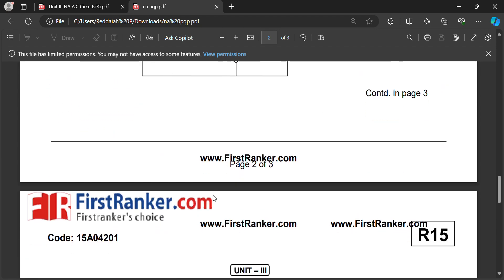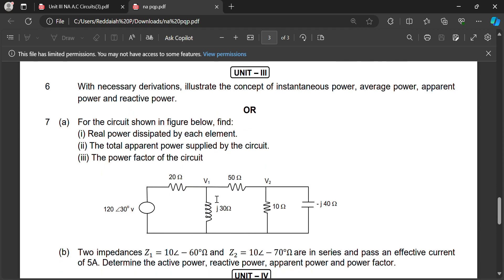Similarly for Unit 3. Illustrate instantaneous power, average power, apparent power, and reactive power, real power, all this by using derivations. P equal to VI cos phi, VI sin phi is the real power, apparent power is S equal to VI, complex power.